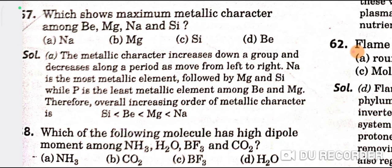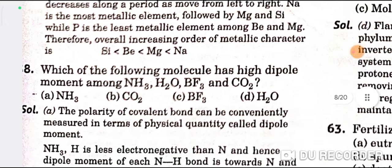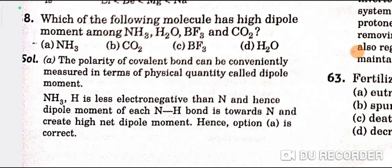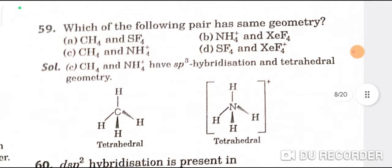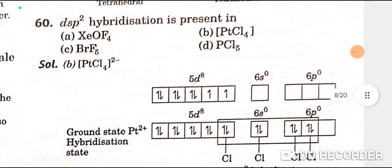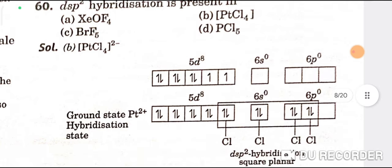Which shows maximum metallic character among beryllium, magnesium, sodium, and silicon? Sodium — A is the correct option. Which molecule has the highest dipole moment among NH3, H2O, BF3, and CO2? NH3 is the correct option. Which pair has similar geometry? CH4 and NH4+ — both have sp3 hybridization and tetrahedral geometry. dsp2 hybridization is present in PtCl4²⁻ — B is the correct option. With this the chemistry section is over.